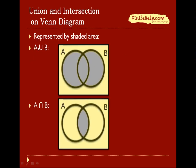To represent a union, you would include everything that is in A or in B. So here you can see the shaded area is A union B.